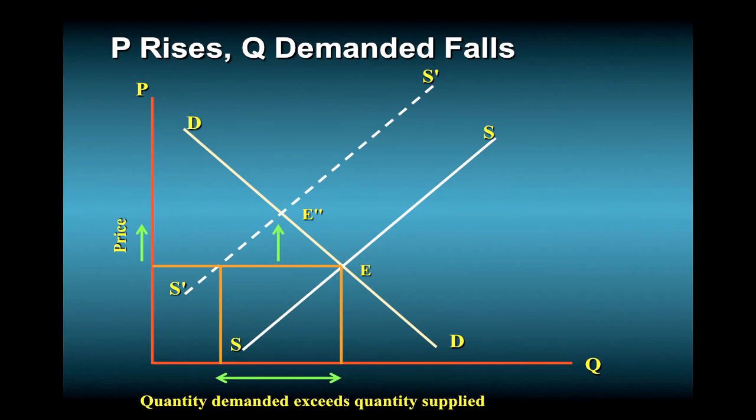And the price continues to rise until, at the new equilibrium price, the amounts demanded and supplied are once again equal. This new equilibrium is found at E double prime, the intersection of the new supply curve S prime S prime and the original demand curve.